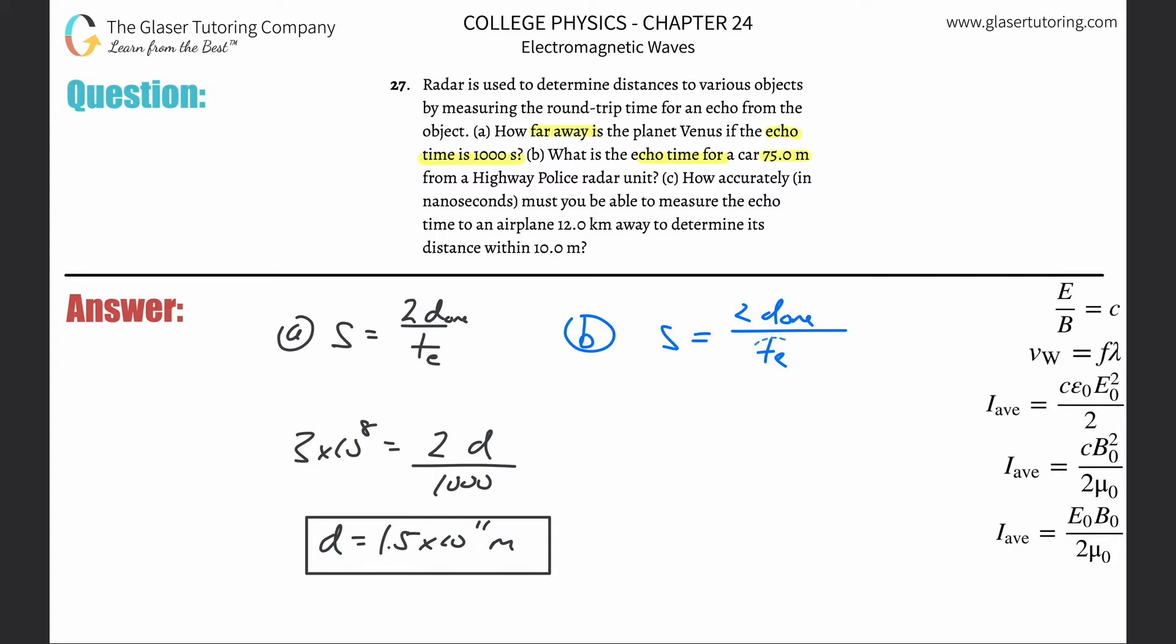So to solve for echo time, just simply cross this on out, just like this. So the echo time here is going to be 2 times the distance the car is away from the police officer, which they said is 75 meters, divided then by the speed.